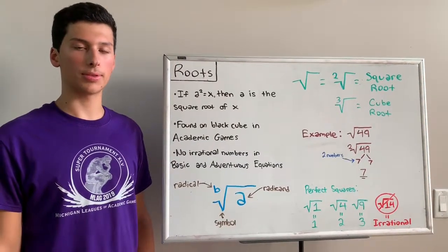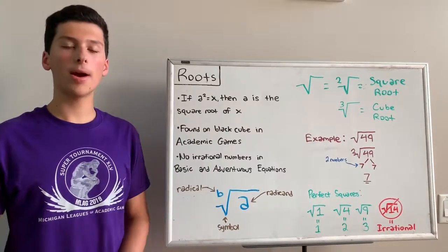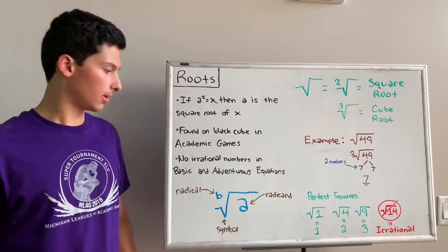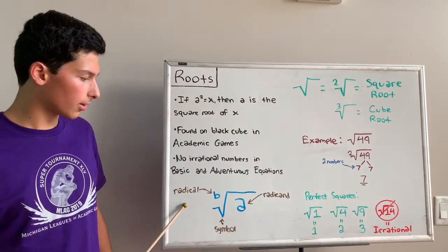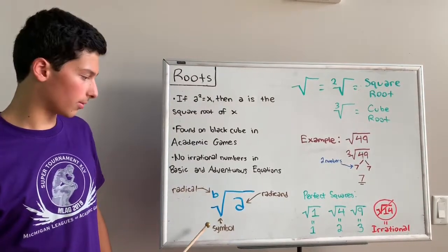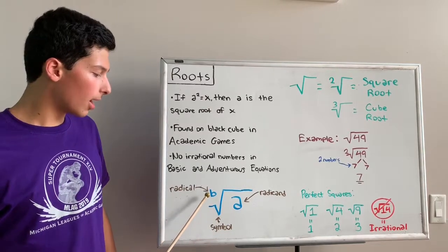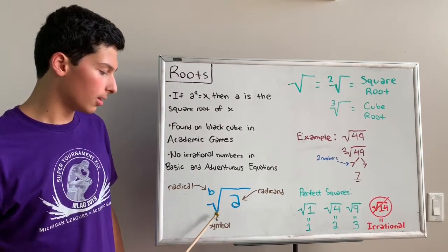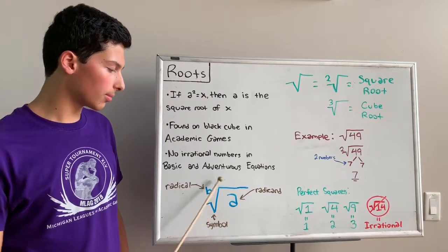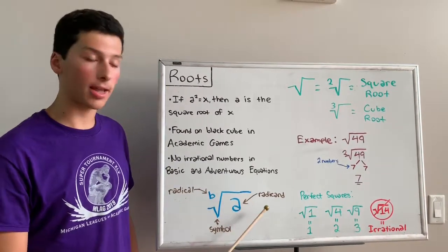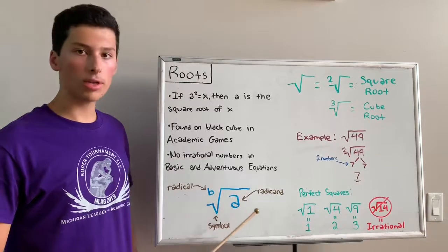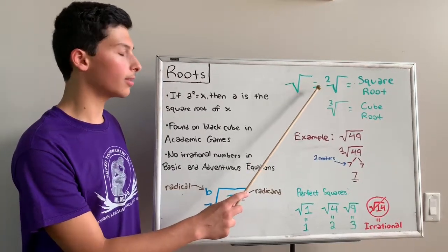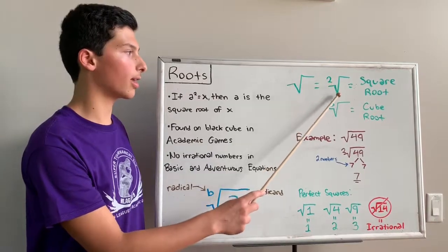Now we'll move on to roots. If A to the power of 2 equals x, then A is the square root of x. This is the anatomy of a square root: we have a radical on the corner of the root, which is B, and A is called the radicand. One quick note: when you see a blank square root sign with no radical, you always assume that 2 is the radical of the square root. If the radical is 3, it would be a cube root.